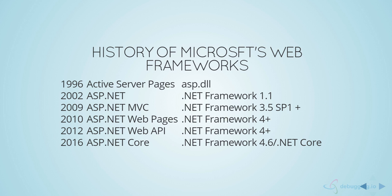Looking at the history of Microsoft web frameworks: Microsoft has released frameworks going all the way back to 1996 with Classic ASP — Active Server Pages — used to build web applications at that time. Then in 2002, Microsoft released .NET Framework 1.1 and ASP.NET 1.1, introducing a different design pattern called Web Forms. In 2009, Microsoft also introduced ASP.NET MVC, the popular Model-View-Controller framework, and the .NET framework has seen many major version upgrades since.